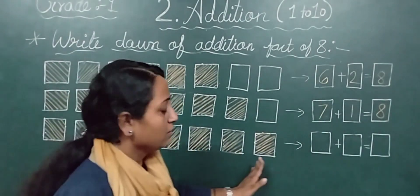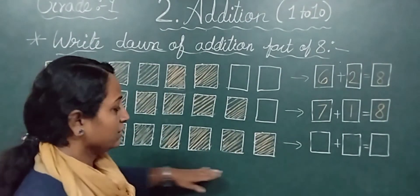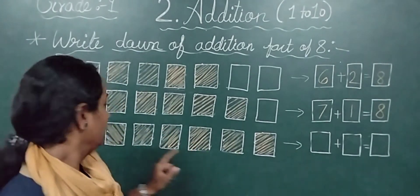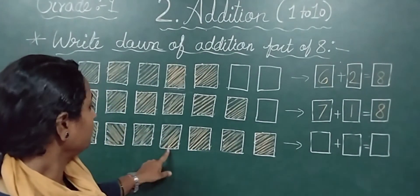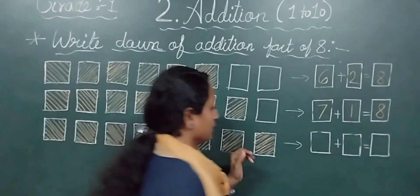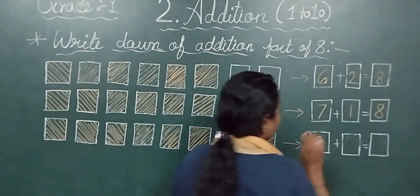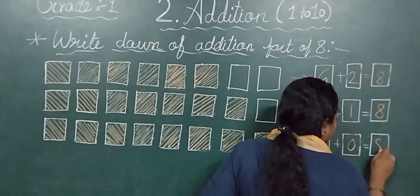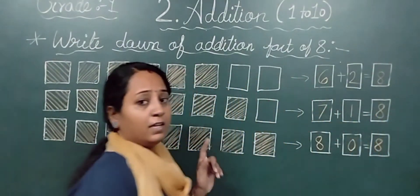Now here. All boxes are colored. Not even one is plain. So how many are these boxes? 1, 2, 3, 4, 5, 6, 7, 8. There are 8. There is no plain here. So I have to put here 0. Answer is again 8.